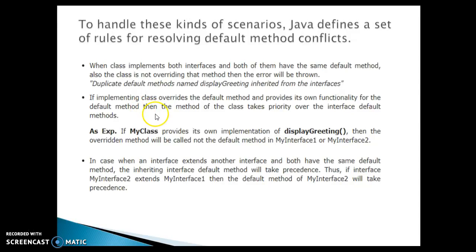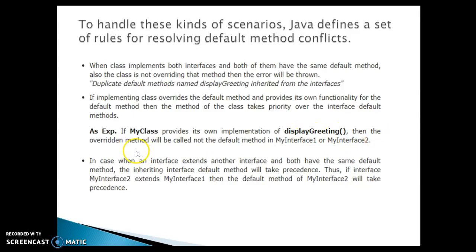Second rule: if the implementing class overrides the default method and provides its own functionality, then the method of the class takes priority over the interface method. Once your class provides a definition of the display greeting method, priority goes to the overridden method in your class. So if my class provides its own implementation of display greeting, then the overridden method will be called, not the default method available in my interface one and my interface two.